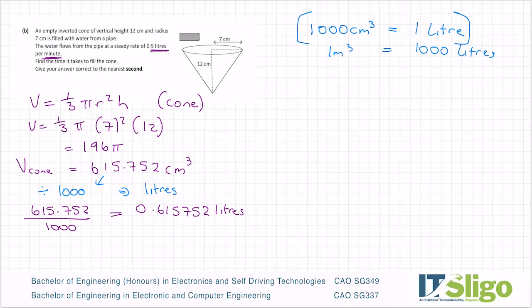Now the water flows from the pipe at a steady rate of 0.5 liters per minute, so for every minute it'll fill by 0.5. Now I have 0.6 or thereabouts here, so you can see it's going to take a little bit more than a minute to fill that cone. So to find out exactly how much it takes, we'll go 0.615752 and we'll divide it by that 0.5 liters. I'm dividing liters by liters here, so 0.615752 divided by 0.5, and I'm getting 1.231504.